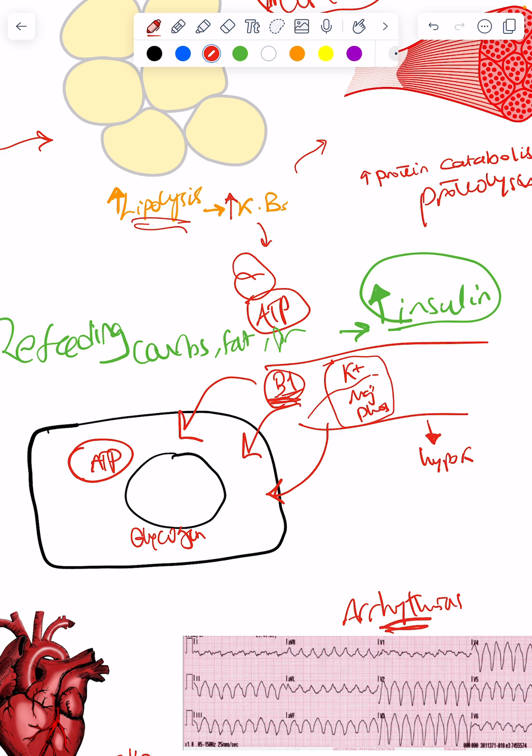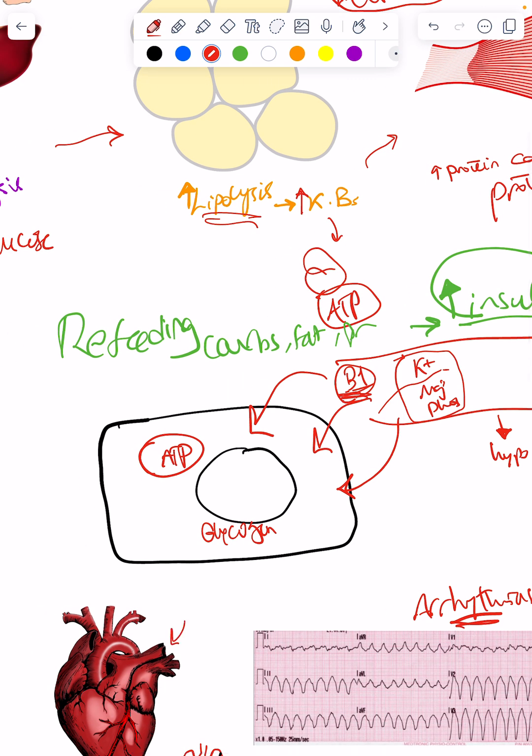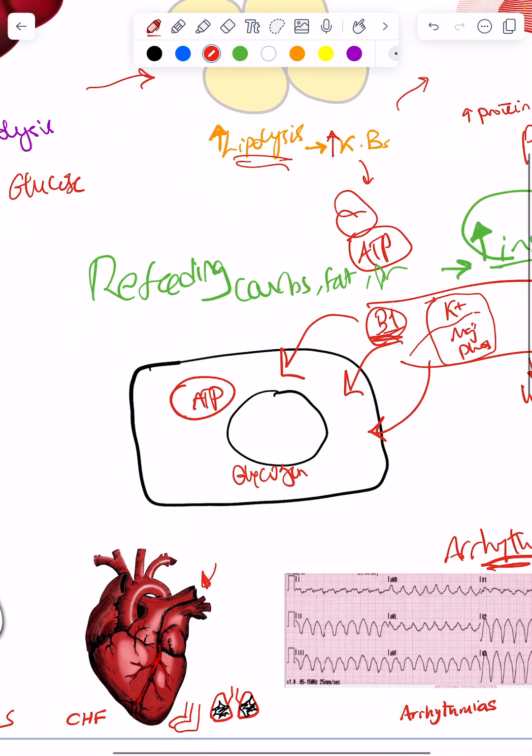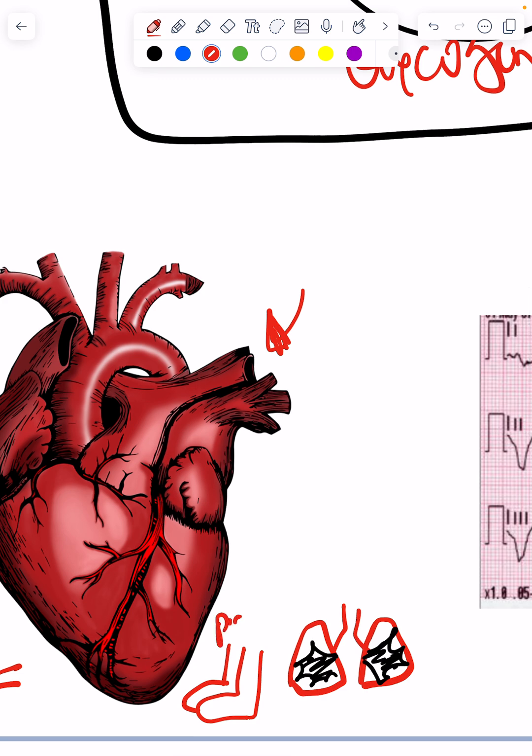So that's going to induce arrhythmias, plus the fact that the heart is already weak from the previous starvation state can lead to heart failure. And so this girl may get congestive heart failure with peripheral edema and pulmonary edema with crackles and all these stuff.